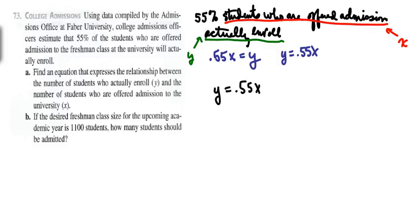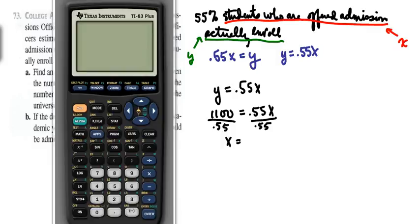So we start with Y equals 0.55X. We're going to let Y equals 1,100. And then all we have to do is solve for X, and we're going to do that by dividing both sides by 0.55. So for this, we'll use our TI calculator, and we just need to divide 1,100 by 0.55. And when we do that, we get a value of 2,000.